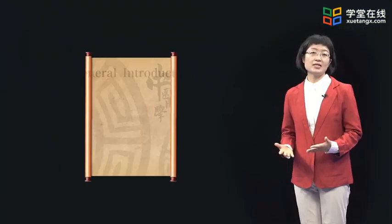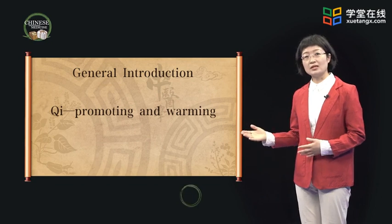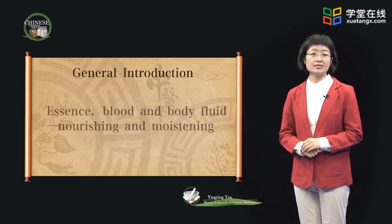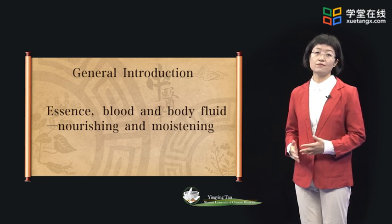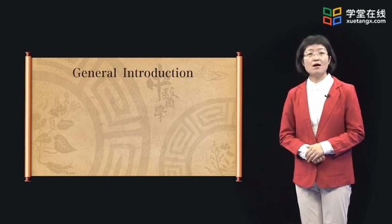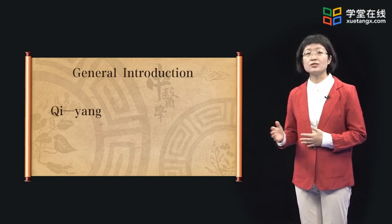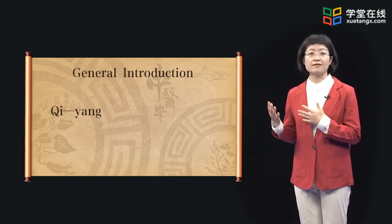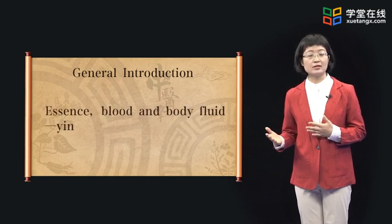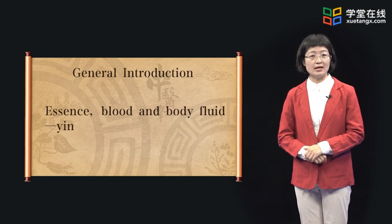Qi, essence, blood, and body fluid are the basic materials to form and sustain the life activities of the human body. They are the basic substances for conducting the physiological activities of zang organs, meridians, tissues, and orifices. Generally speaking, qi has the functions of promoting and warming, while essence, blood, and body fluid have the functions of nourishing and moistening. According to yin-yang theory, qi belongs to yang since it is invisible and active, while essence, blood, and body fluid belong to yin because they are visible and inactive.